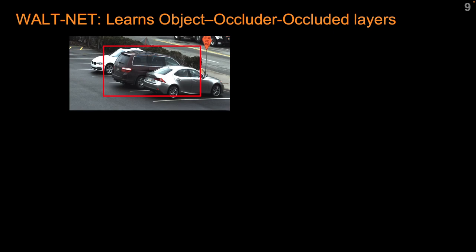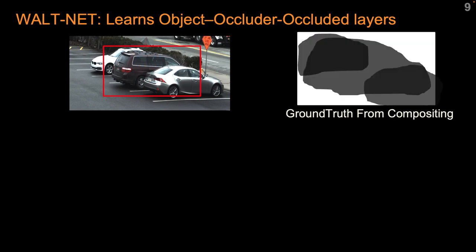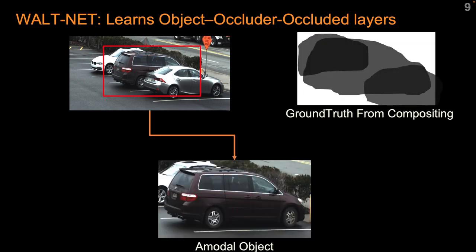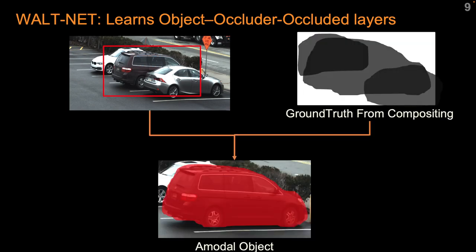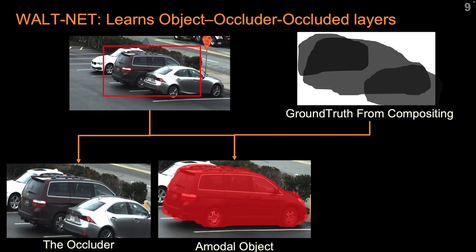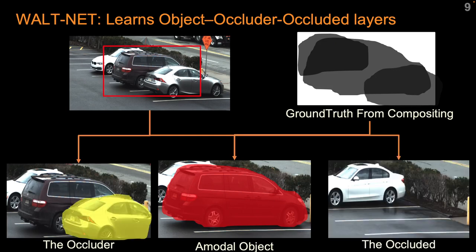Given an image and ground truth from compositing, every bounding box contains three components: the object that needs to be segmented, the occluder, and the occluded. We use VaultNet for learning these three representations.